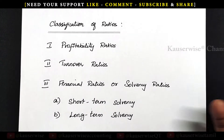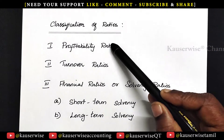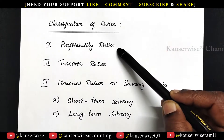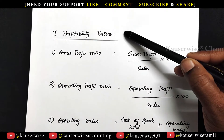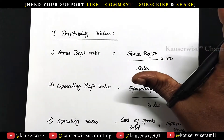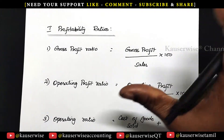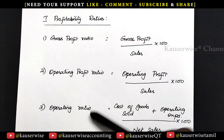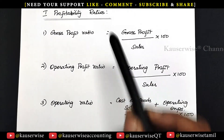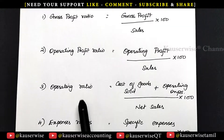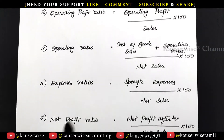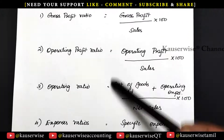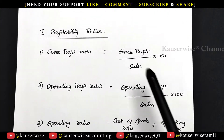Let us see the different formulas which come under each and every classification. Let us see the first one, that is profitability ratios. In profitability ratios, nearly 15 formulas are there. I have taken the first 5: gross profit ratio, operating profit ratio, operating ratio, expenses ratio, and net profit ratio. These are the 5 profitability ratios based on sales.